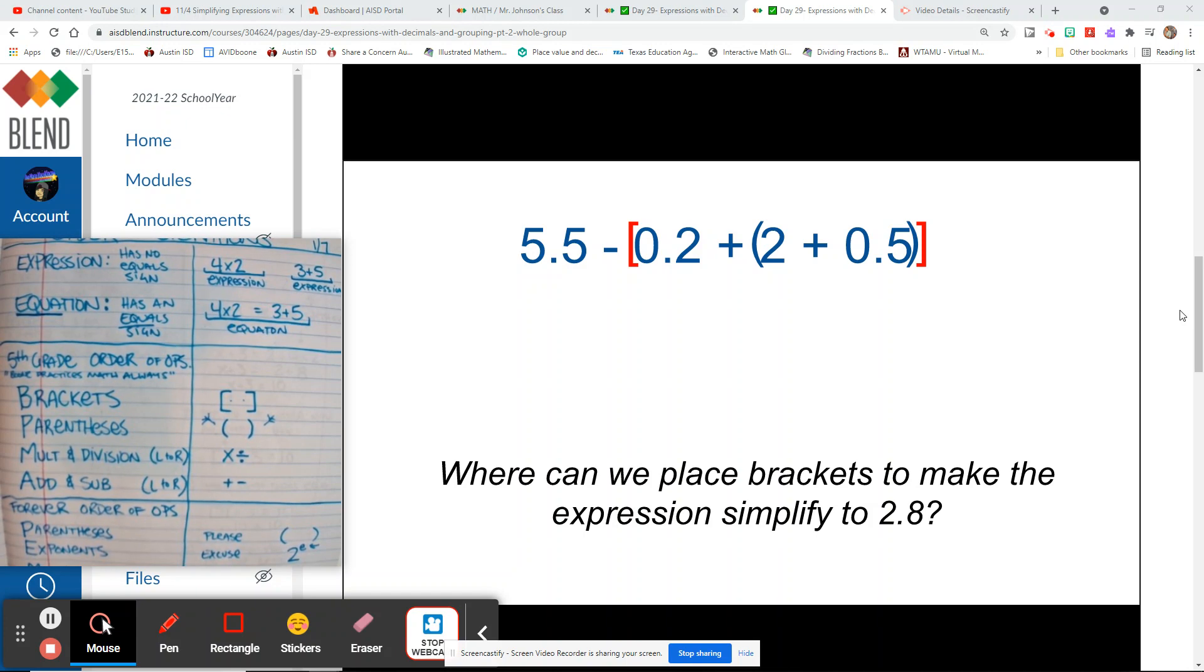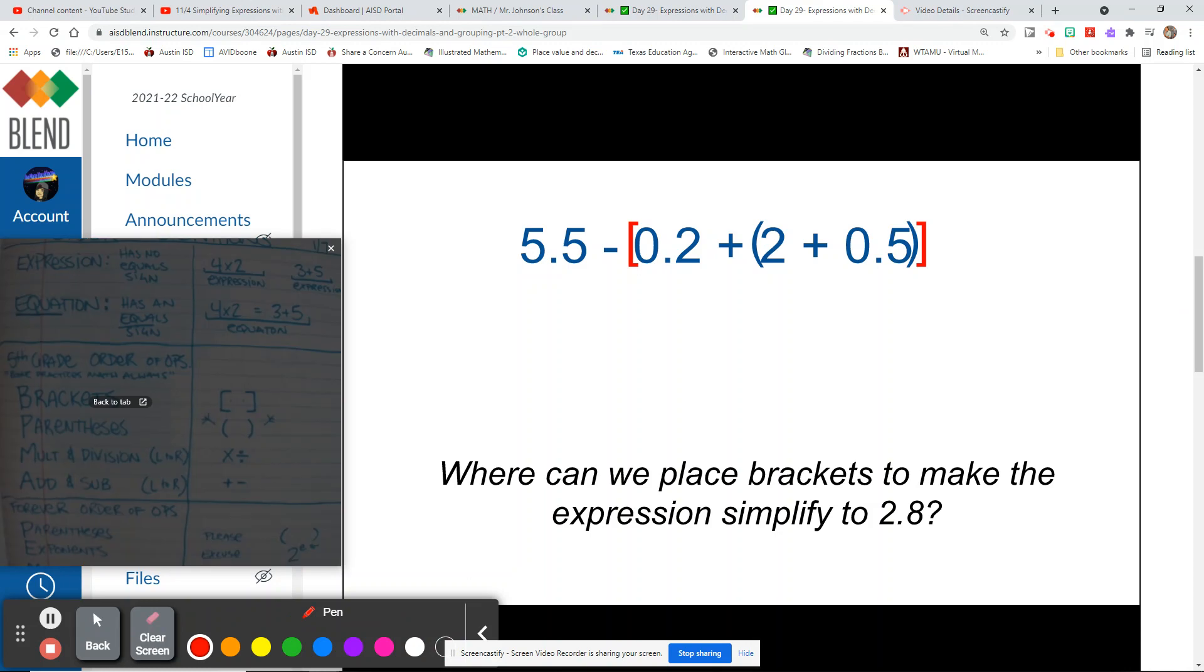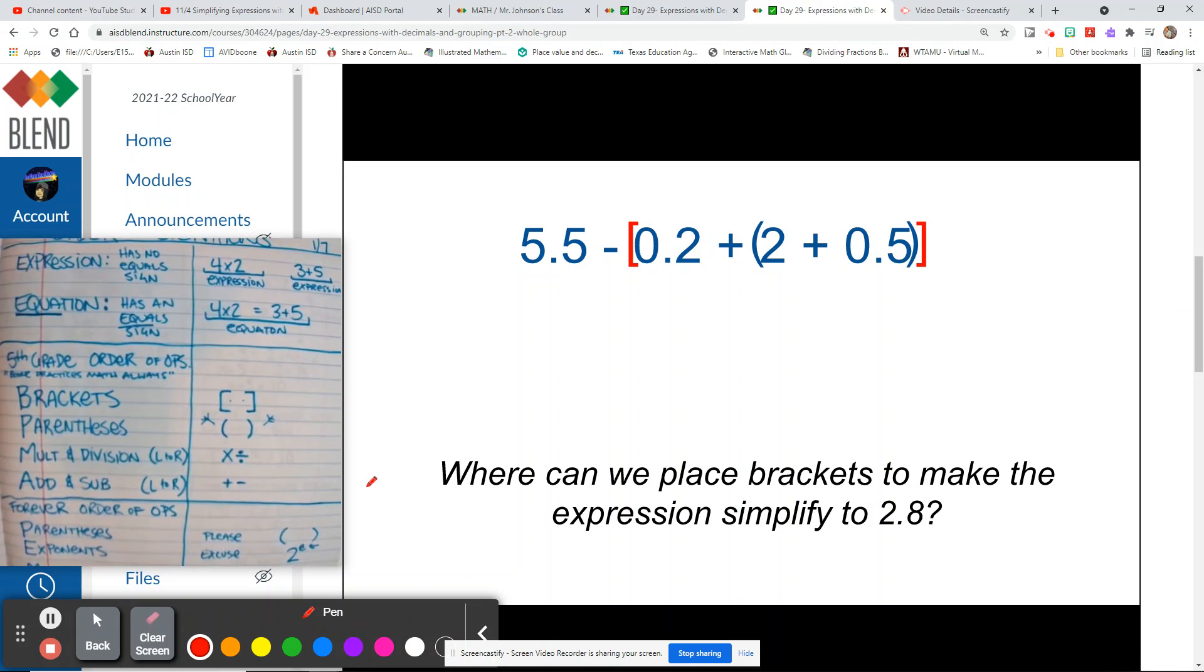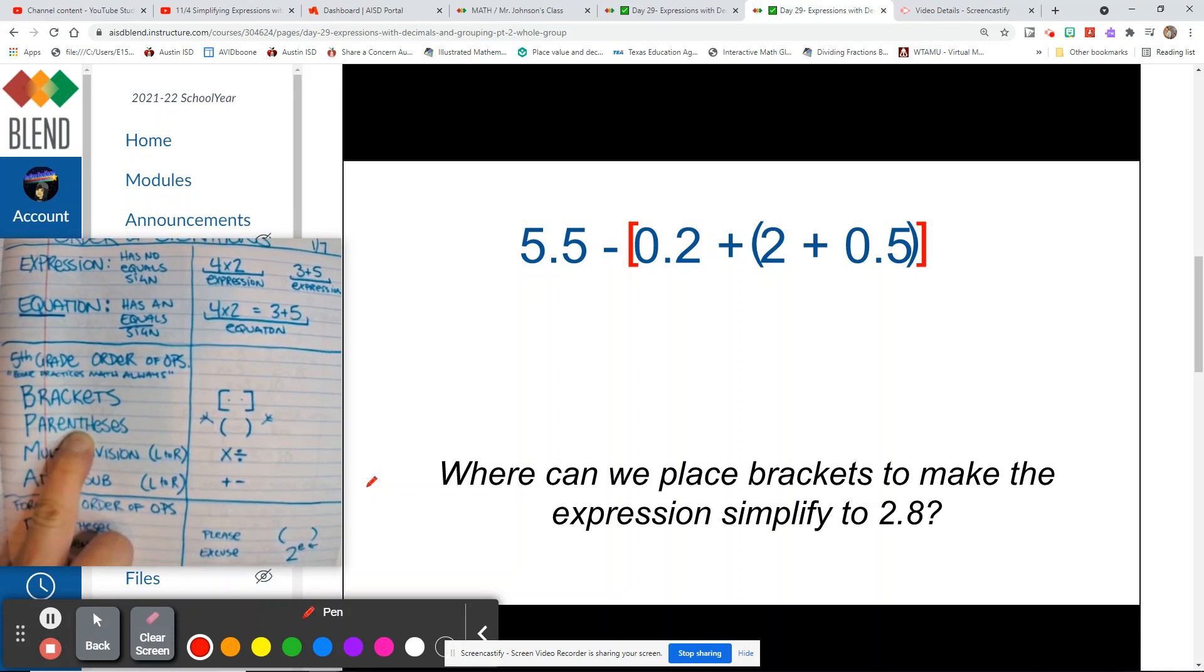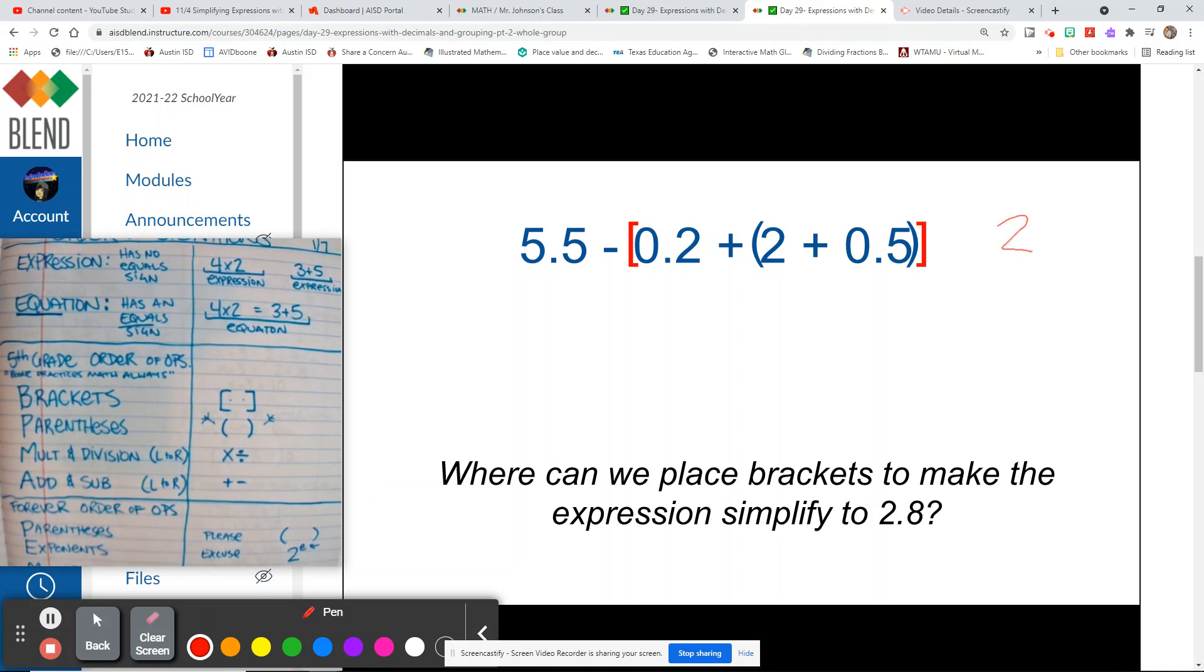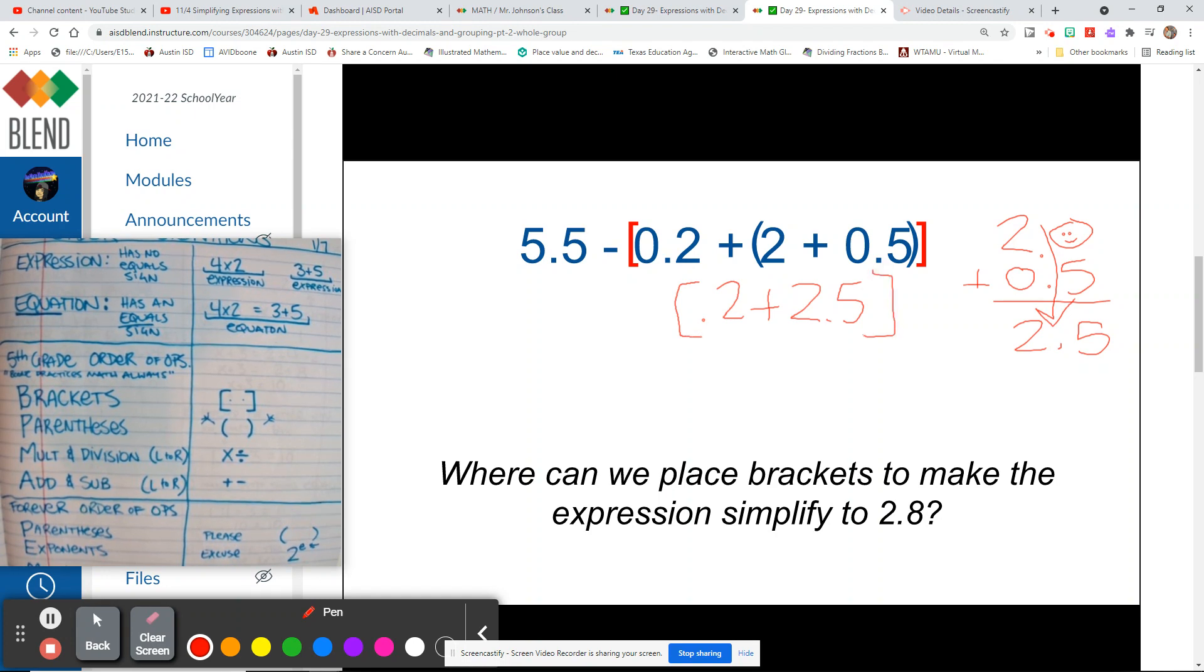The first thing we're going to do is add what's inside the parentheses within the brackets. So we're going to add 2 plus 0.5. Remember, the 2, I'm using a zero to make it easier to add those together. So I get 2.5 when I add 2 plus 0.5. Now my parentheses can disappear because I have an operation symbol, and I can also get rid of that zero because that's just another digit I don't need on the 0.2.